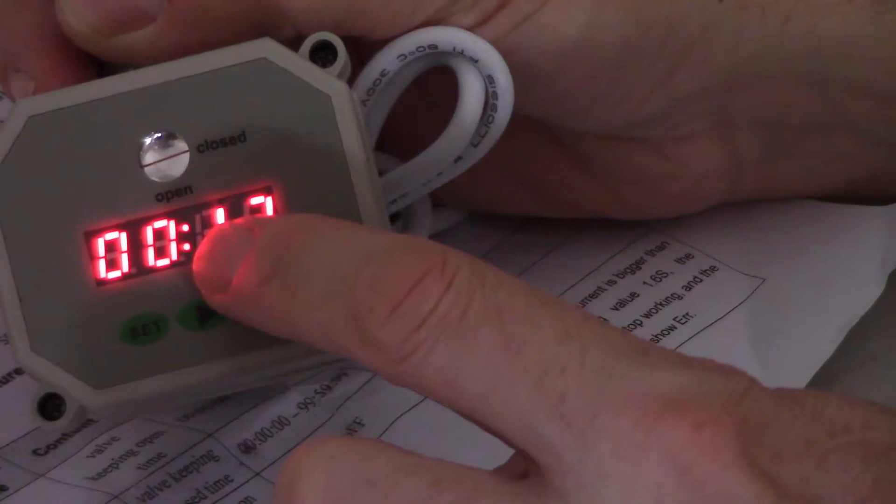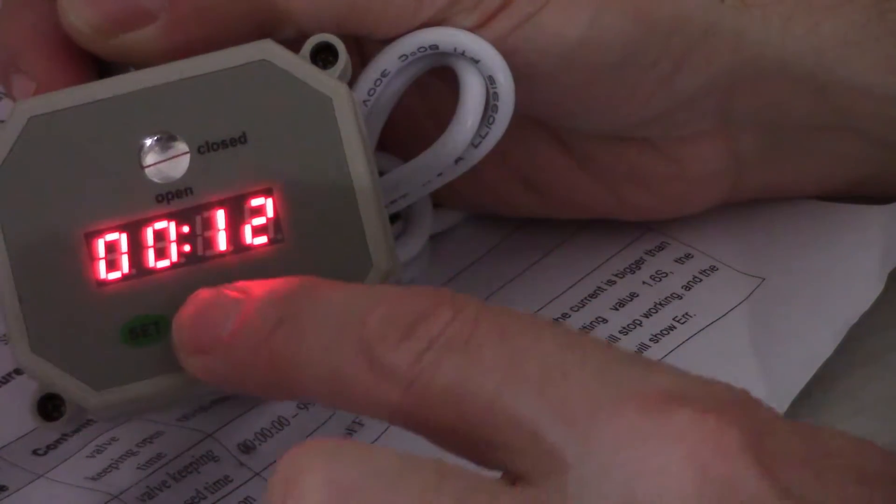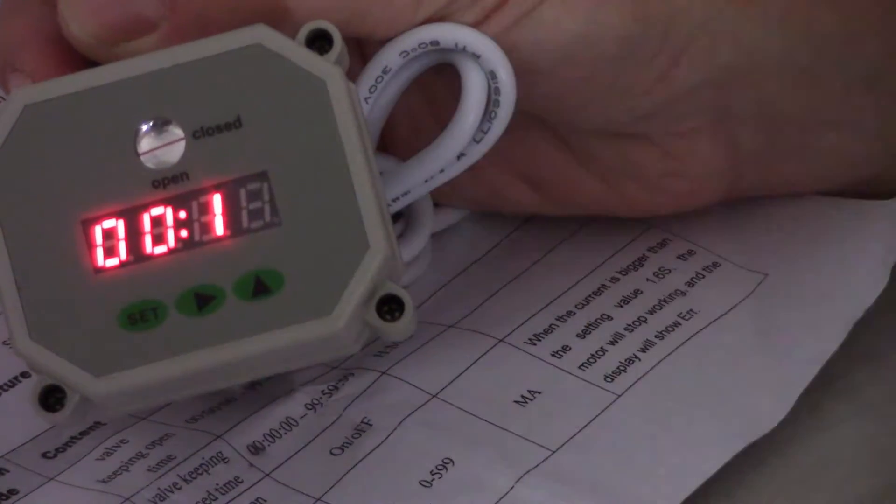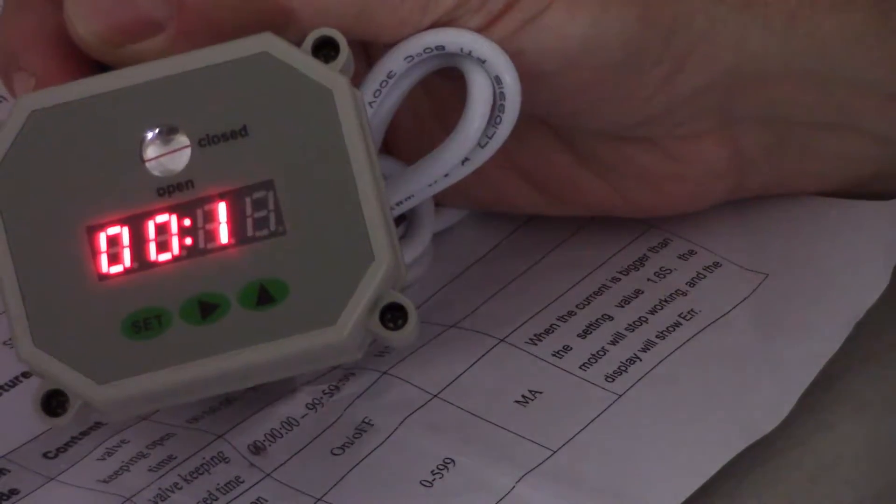I've programmed it for 12 seconds to remain open, which is long enough for water to pass through and flush it out. So that's how you set it when you turn it on.